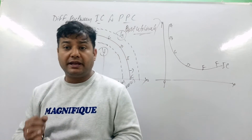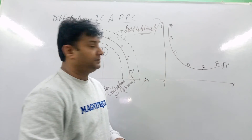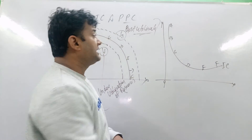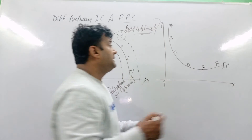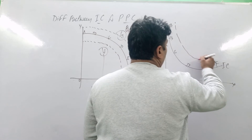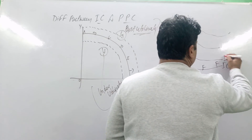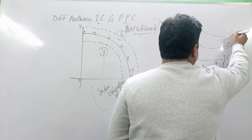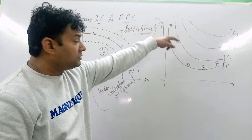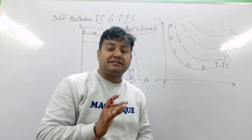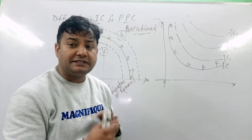Now for the indifference curve approach: the consumer gets equal satisfaction at all points on a given IC. As we move outward, we get IC1, IC2, and IC3. The higher the indifference curve — the higher the IC — the higher the level of satisfaction. The indifference curves always remain parallel to each other and they never touch the X-axis or Y-axis. These are the key properties of the indifference curve.